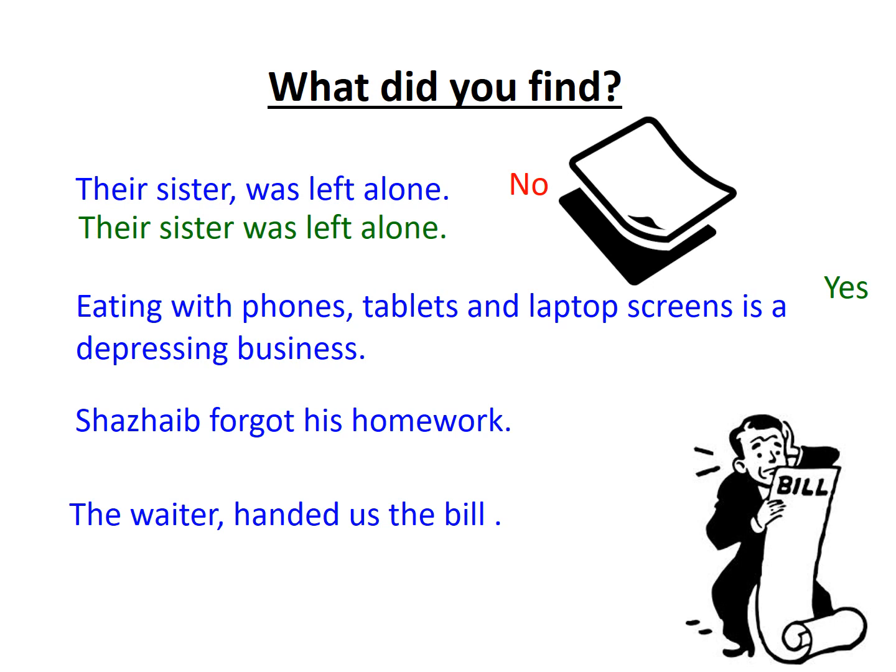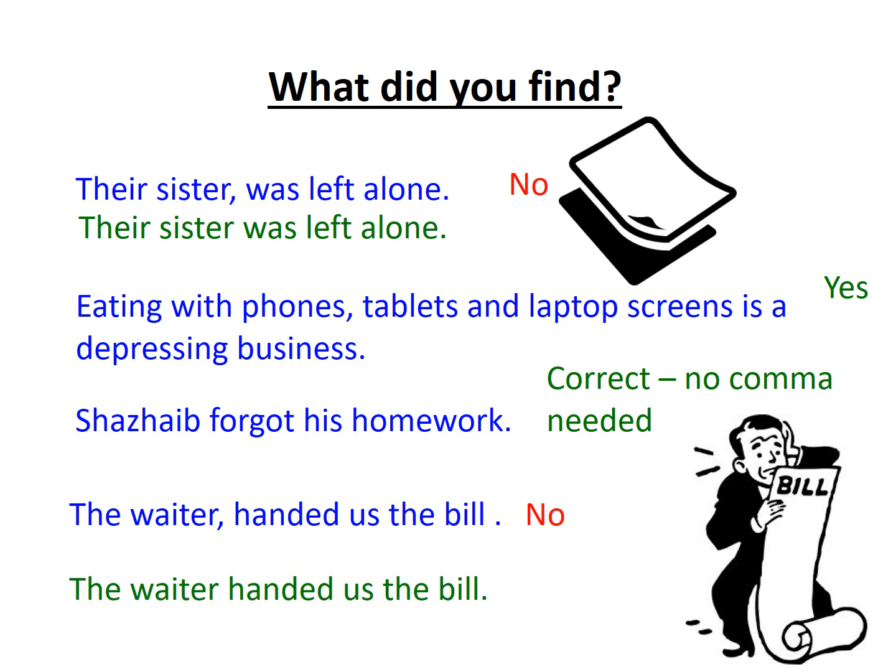The third example is 'Shazaib forgot his homework.' It's correct. We wouldn't need a comma to separate Shazaib — who is the subject — and the verb, the fact he forgot. There's no comma needed at all. Finally, 'The waiter, handed us the bill.' This is incorrect. We should never separate our subject, which in this case is the waiter, from the verb. 'Handed' is the verb. We therefore need to remove the comma.